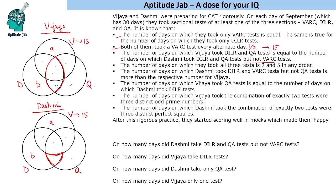The number of days on which they took all three tests is 2 and 5 in any order — so it can be 2 for one person and 5 for the other.